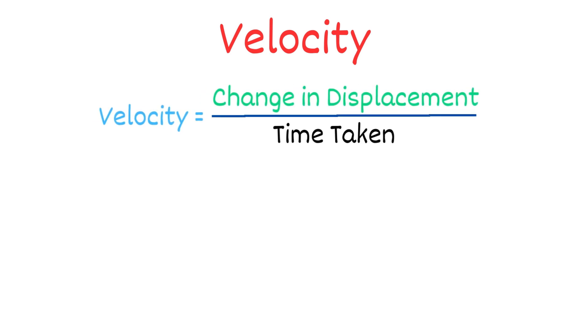Next, let's move to the basic definition of velocity. Velocity is the change in displacement divided by time taken, or v = ds/dt. So, differentiating the displacement function gives us velocity.